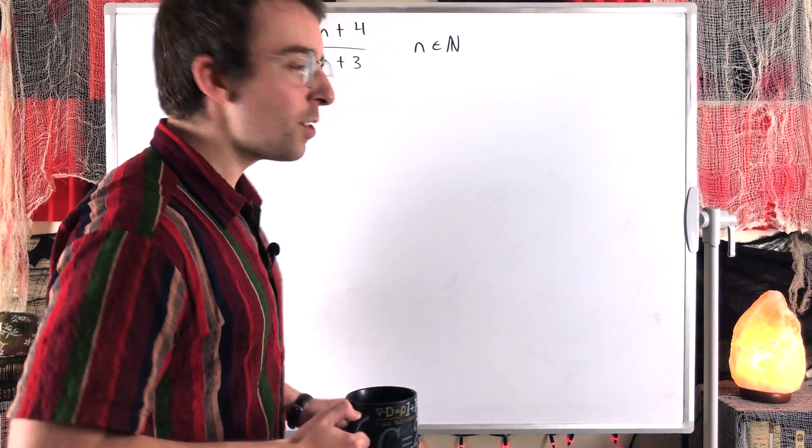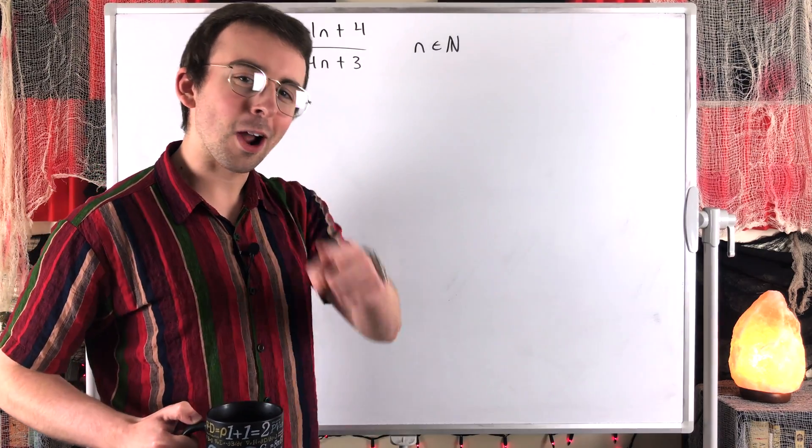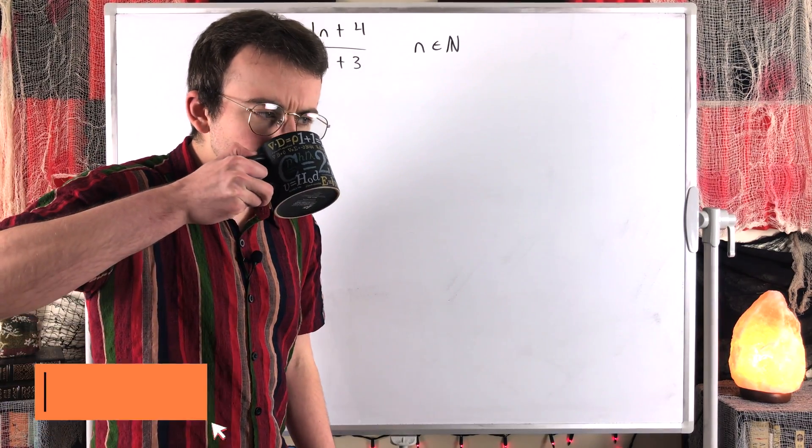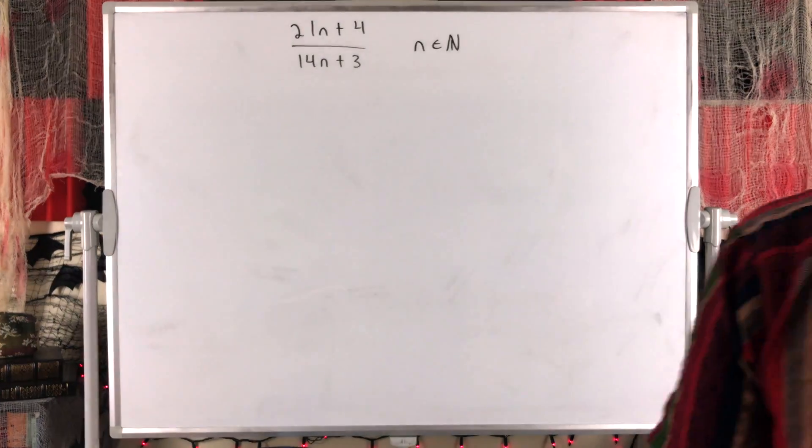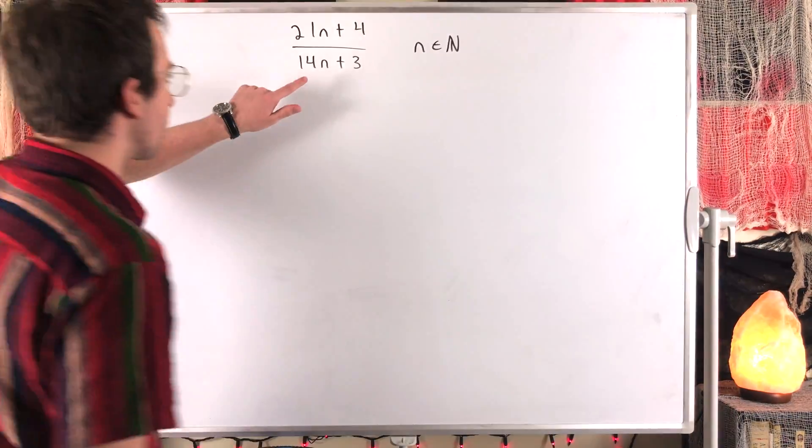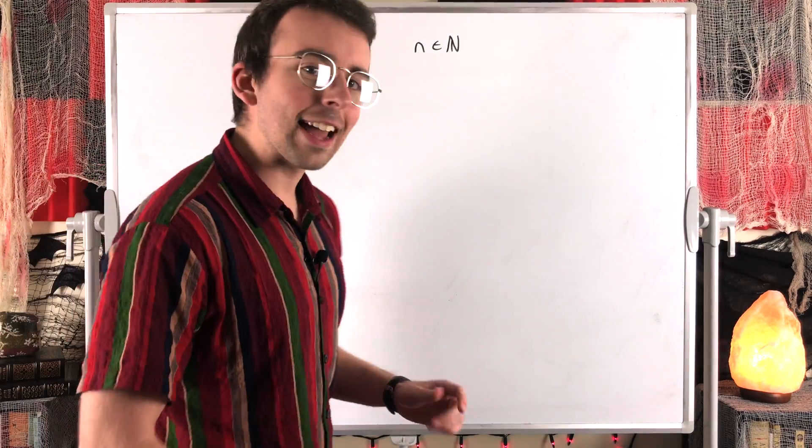There's nothing I'd rather be doing right now than solving this problem with you. Let's do it. We've got this expression: 21n plus 4 over 14n plus 3, where n is a natural number.